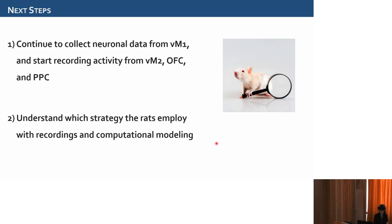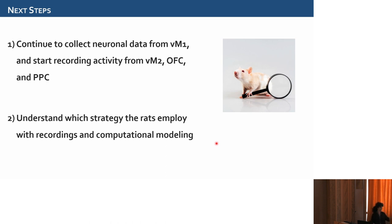Our next steps will be to continue collecting neuronal data from VM1, but we also want to add the secondary vibrational motor cortex, orbital frontal cortex — areas involved in decision making — and to record from posterior parietal cortex, an associative area involved in attentional processes. We want to understand which strategies, attentional selection or response inhibition, are implemented by the rats, using both neuronal data and computational modeling. If we understand what the rats are doing and what happens in their brains, the results could be useful for human conditions in which focusing on important information is impaired, such as neurodevelopmental conditions like ADHD, autism, and schizophrenia.